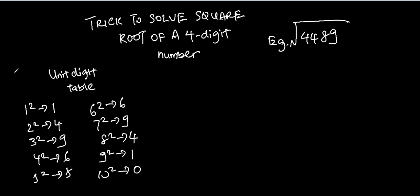This unique-digit table tells us the square of a single-digit number and what its last digit is. So in this case: 1 squared, the last digit is 1; 2 squared, the last digit is 4; 3 squared, the last digit is 9; 4 squared is 16, so the last digit is 6; 5 squared is 25, so the last digit is 5; and so on and so forth.